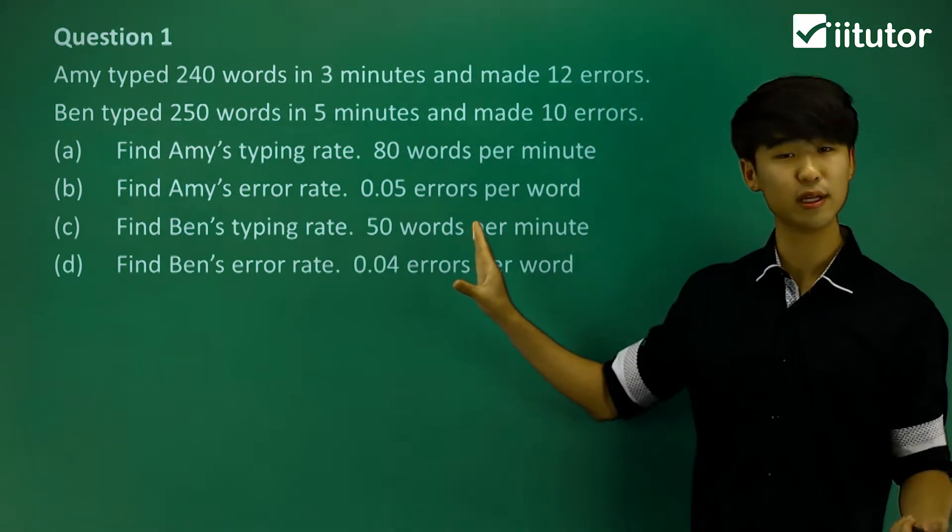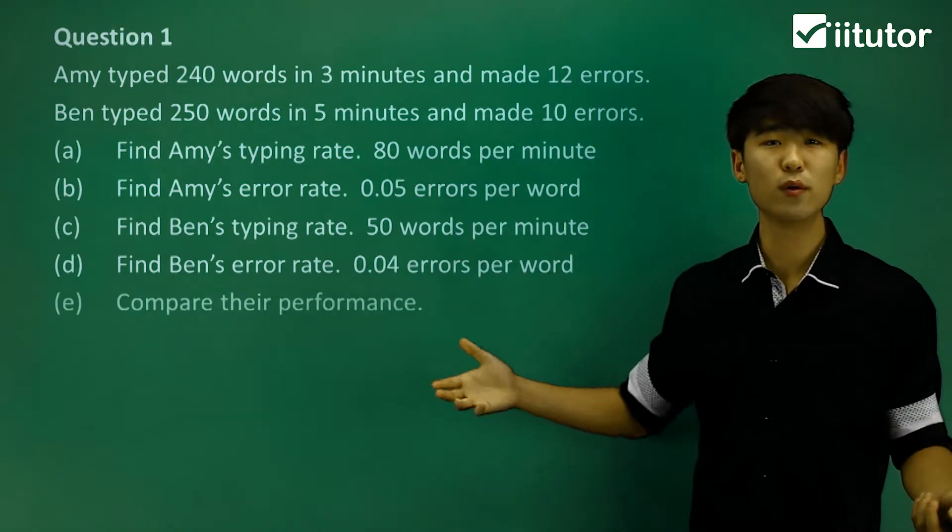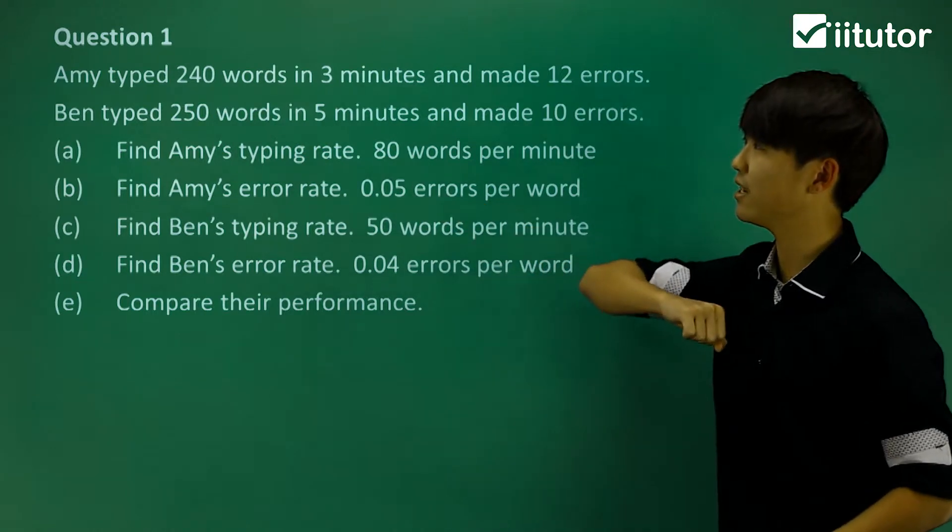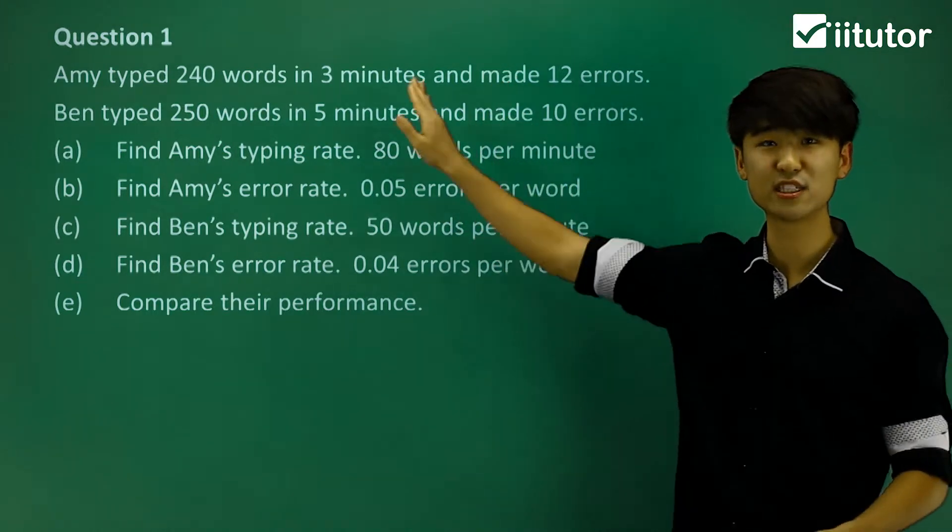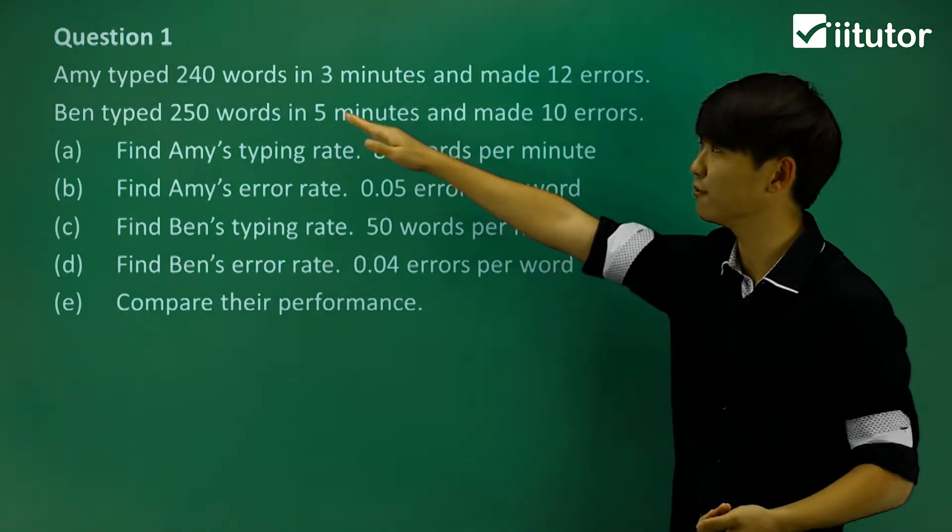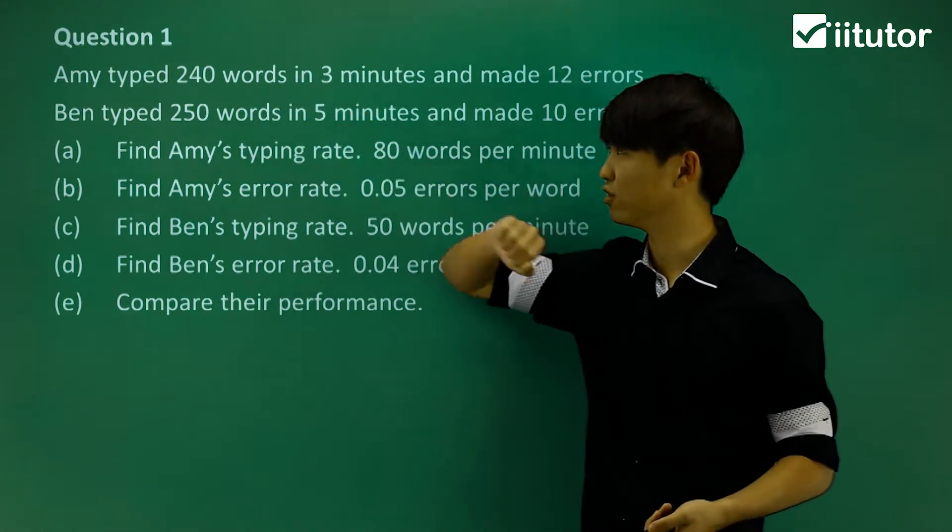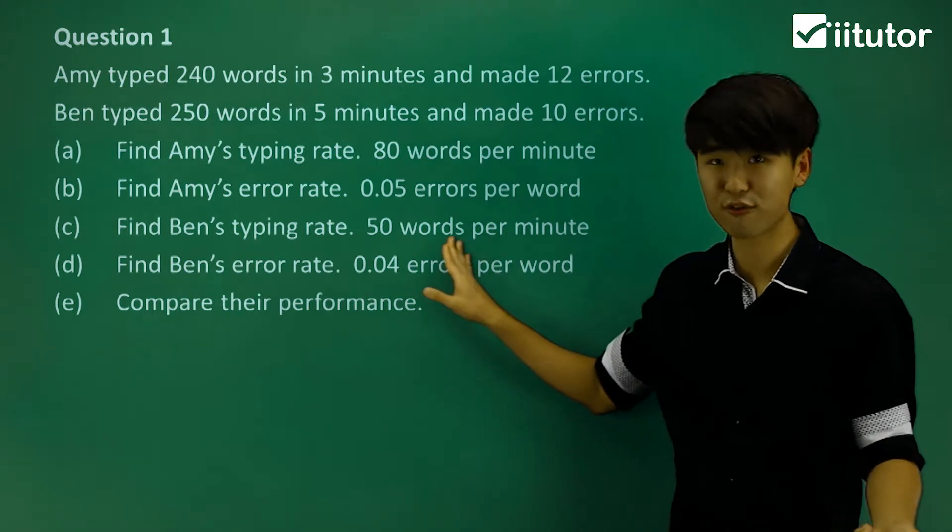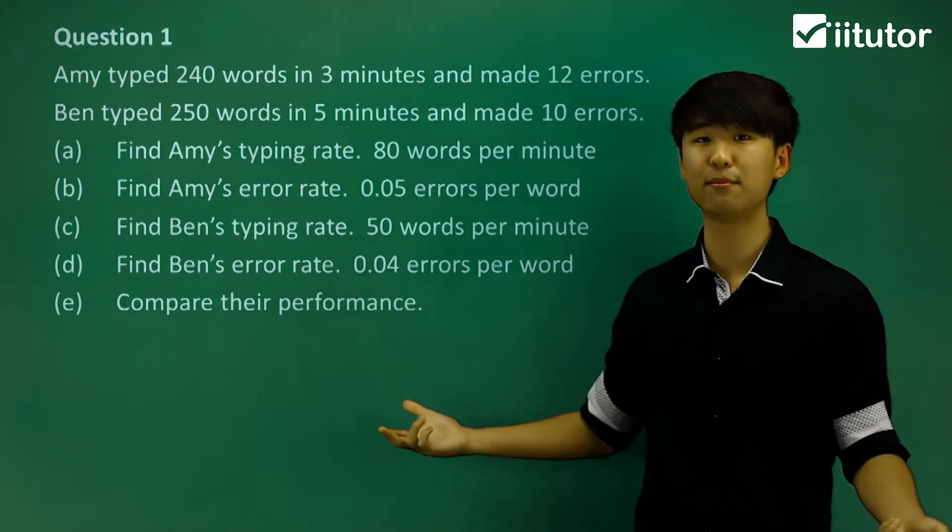Now, rates are really important and really useful when we're trying to compare their performance. So if we just look at this information up here, we can't really say either one did better just looking at the question, right? Because 240 words in three minutes, 250 words in five minutes, who did better? We can use the rates to be able to compare their performance.